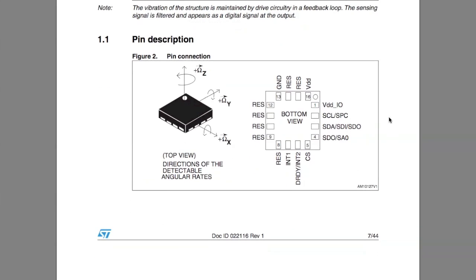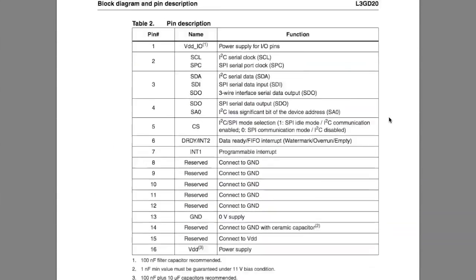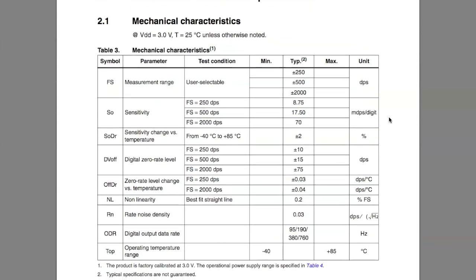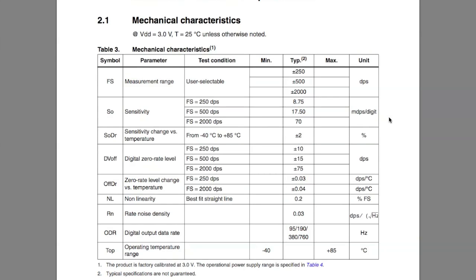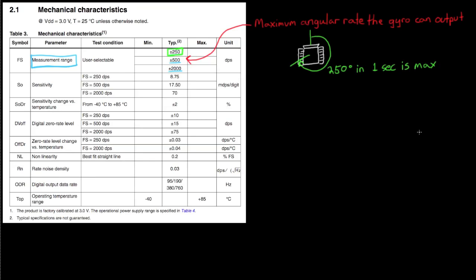In our case, we don't need to worry about the pin description because the MinIMU-9 takes care of all of that for us. But this would be important if you wanted to use this sensor in your own circuit design. All right, now we're getting to the good stuff, the mechanical characteristics of the gyro. Now I want to write a little bit about this, so I'm going to copy this figure into the blackboard so I can write at the exact same time. So let's start at the top.